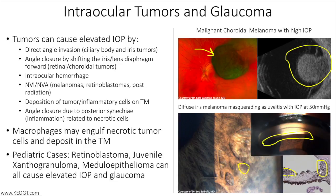When there is concern in these rare cases, other classes of topical therapeutics can be used. Worries about enhancing conventional and non-conventional aqueous humor outflow leading to liberation of tumor cells out of the eye have not been validated in any study. In fact, there is no clear contraindication to the use of any class of topical IOP-lowering medications, and the treating physician should use their typical algorithm with a primary goal of decreasing pressure and preserving optic nerve function.